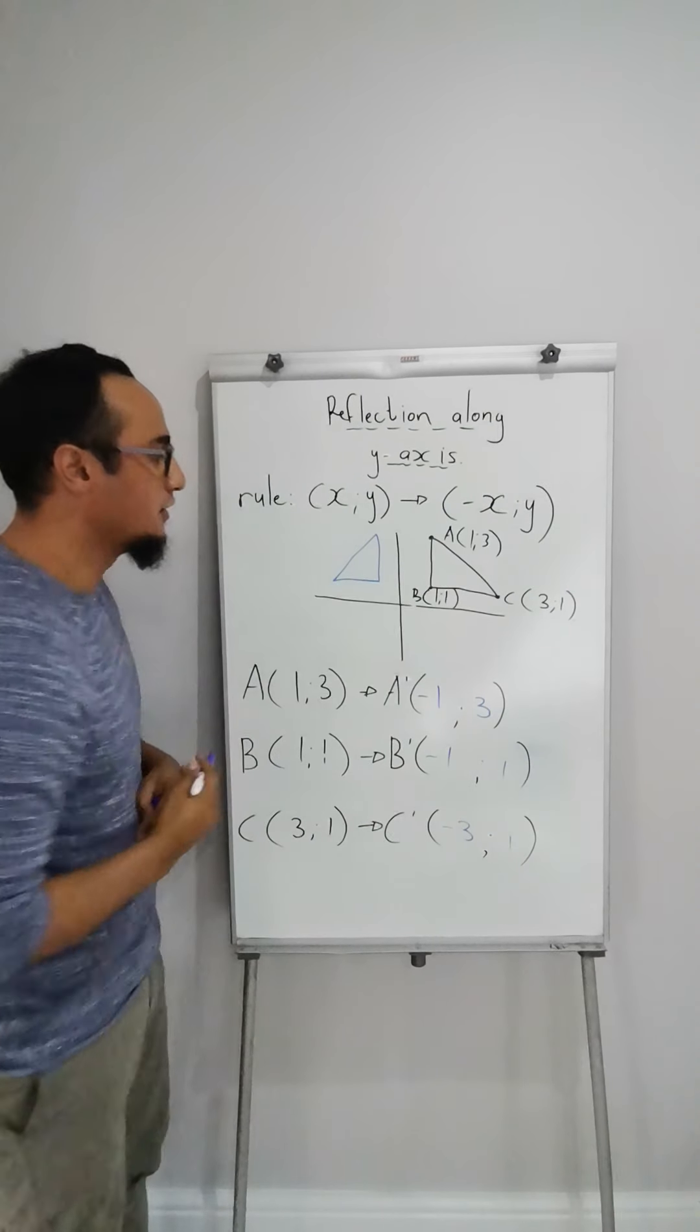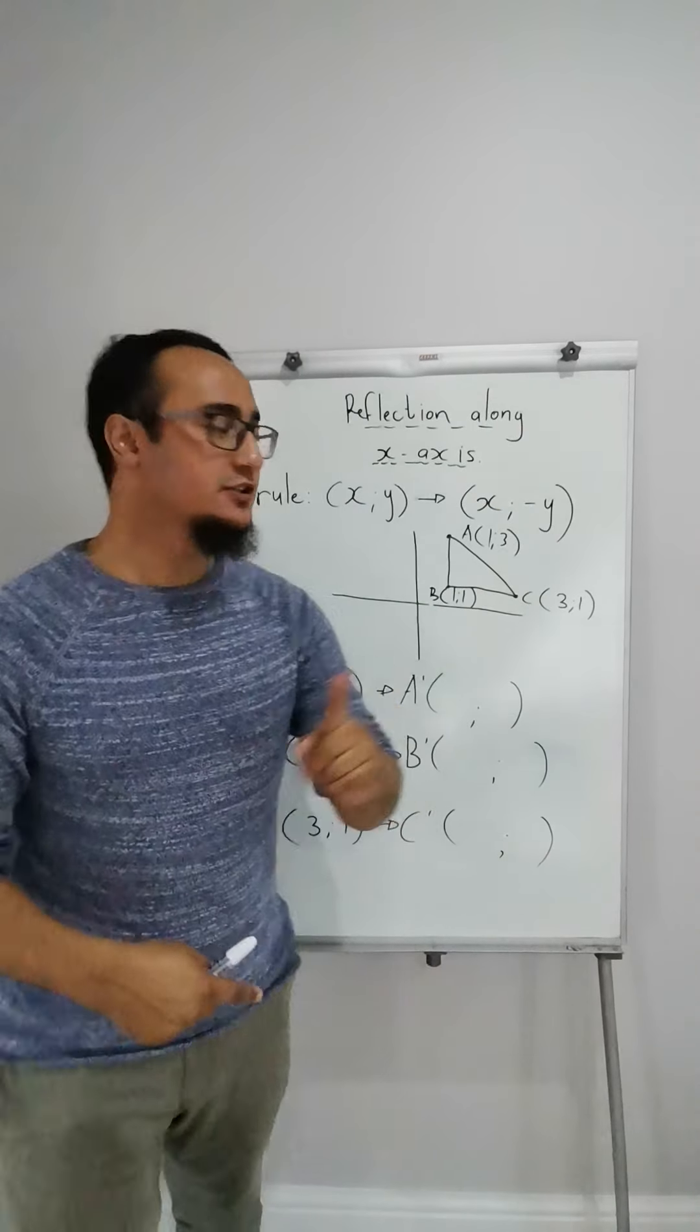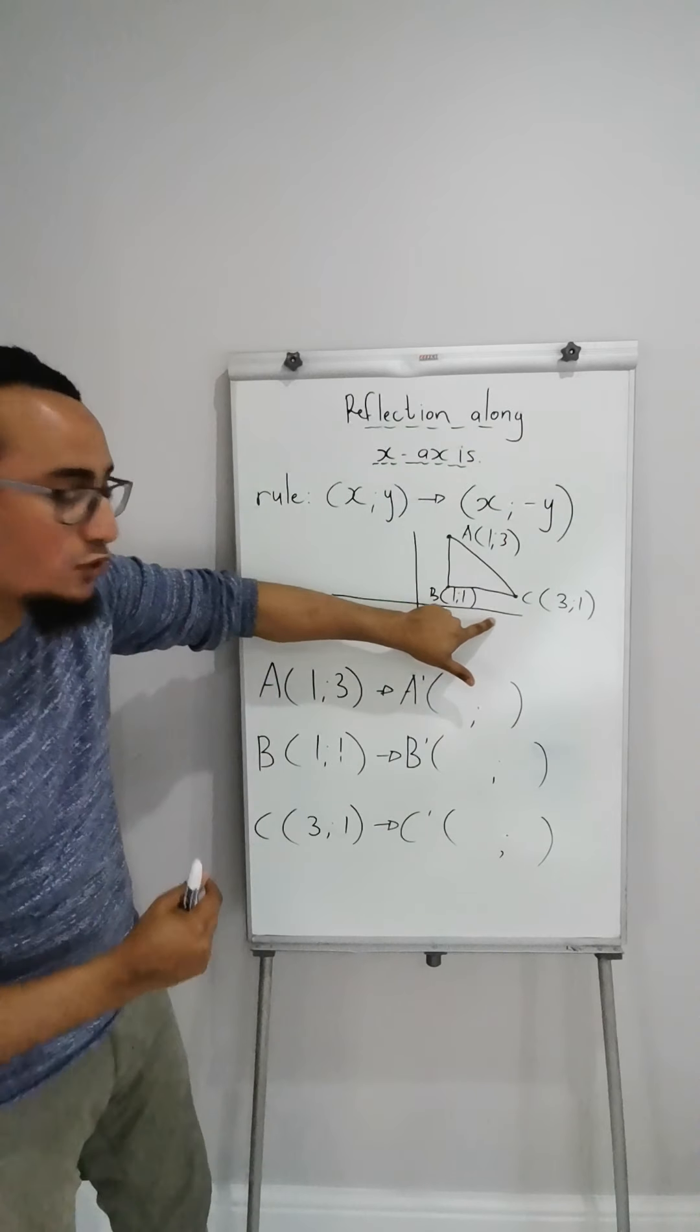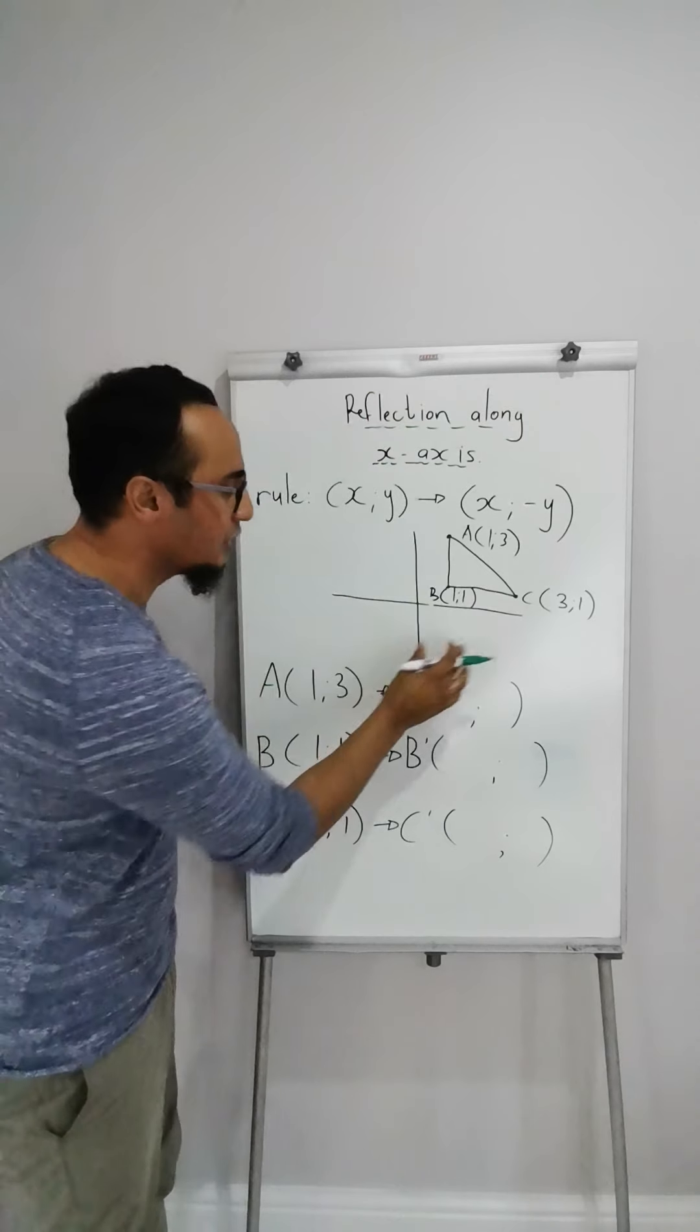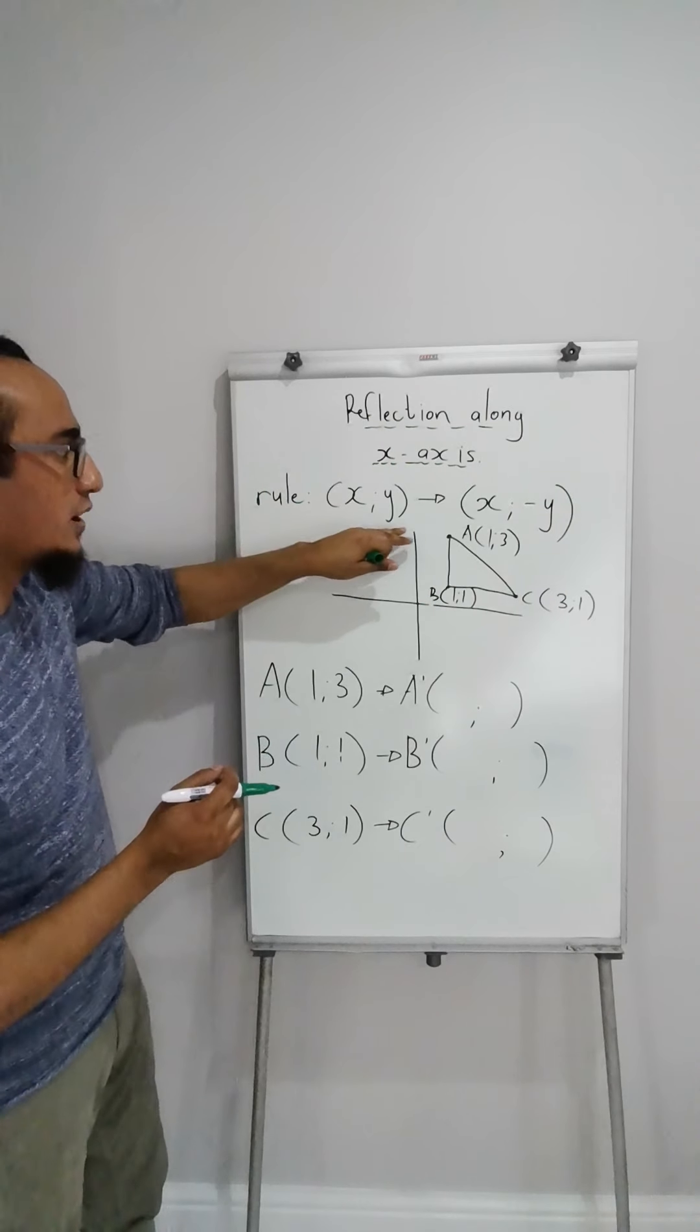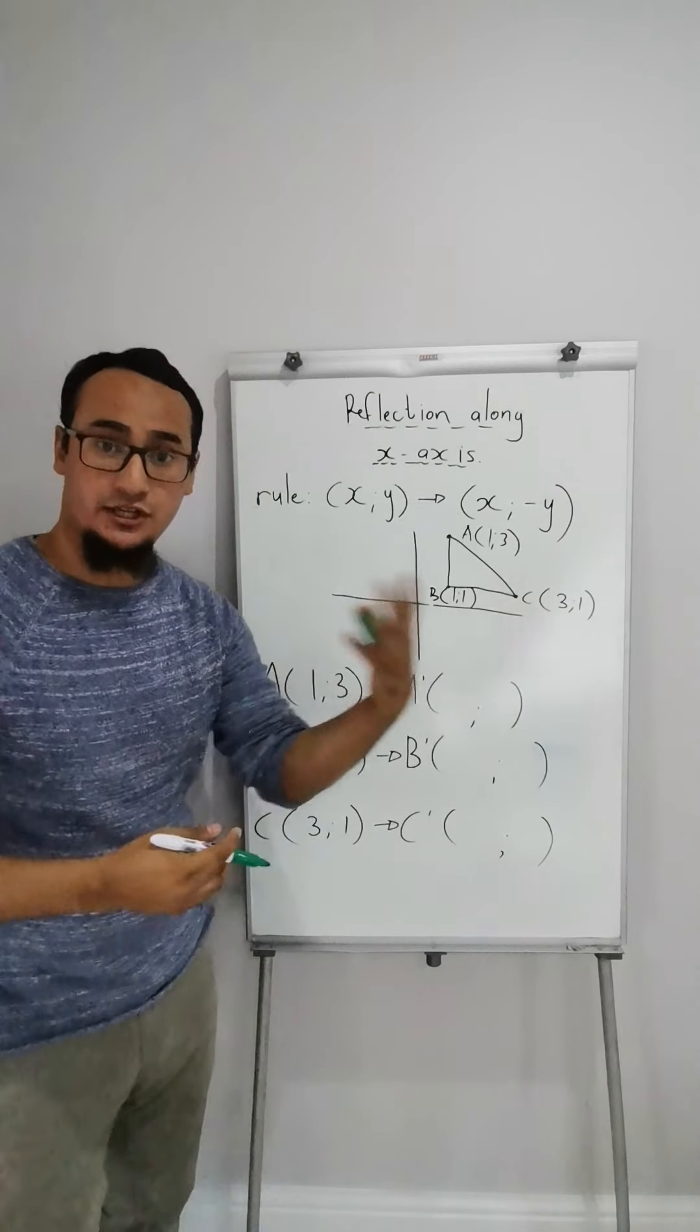The rule is if you have your point x and y value, when the reflection takes place, the x plus or minus, the sign changes. That is it. So if this is 1 and 3, the reflection along that y-axis, the x-sign will change. With that being said, let's begin.